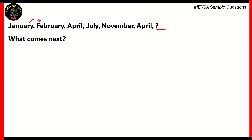Between January and February, there are zero months — February comes right after January. Between February and April, there is one month: March. Between April and July, there are two months: May and June. If you look at July and November, you can see there are three months in between: August, September, and October.